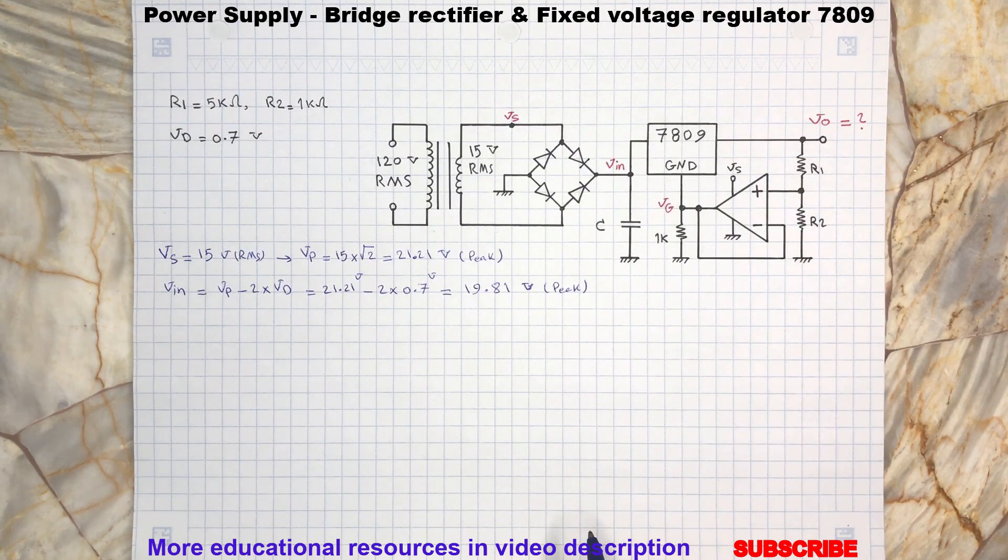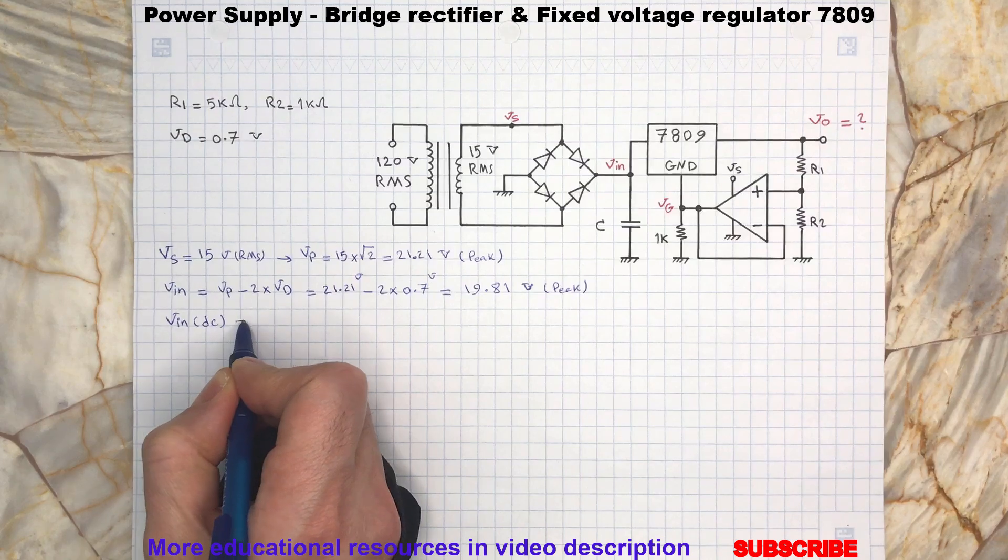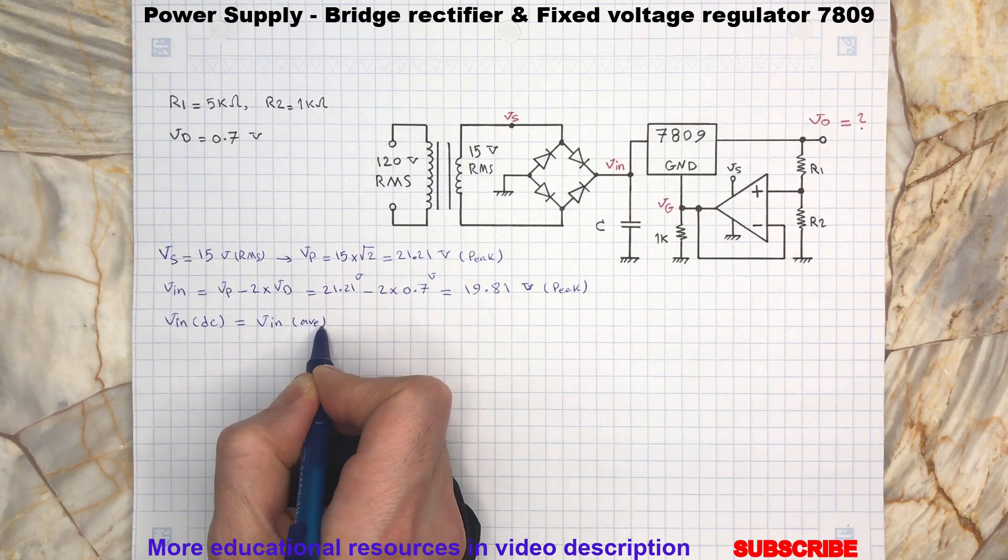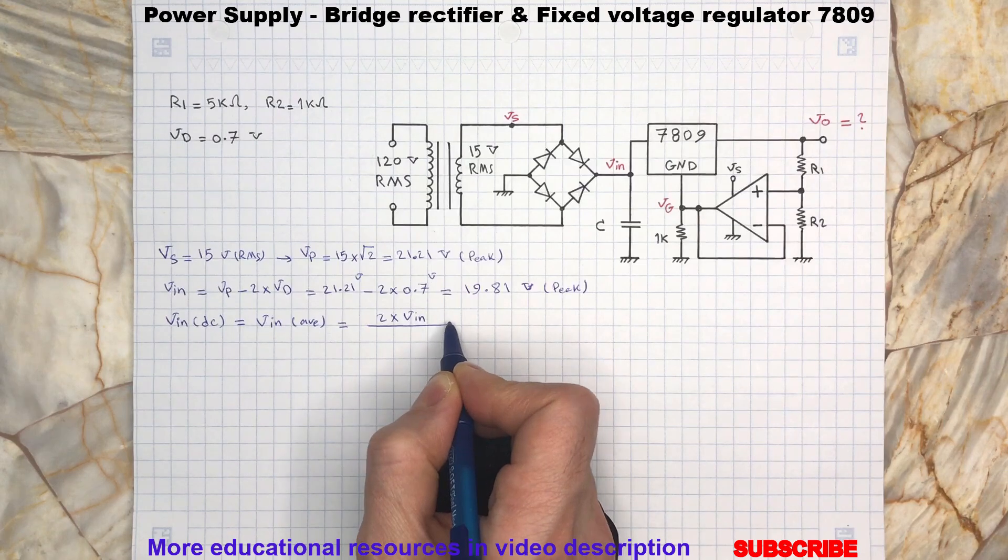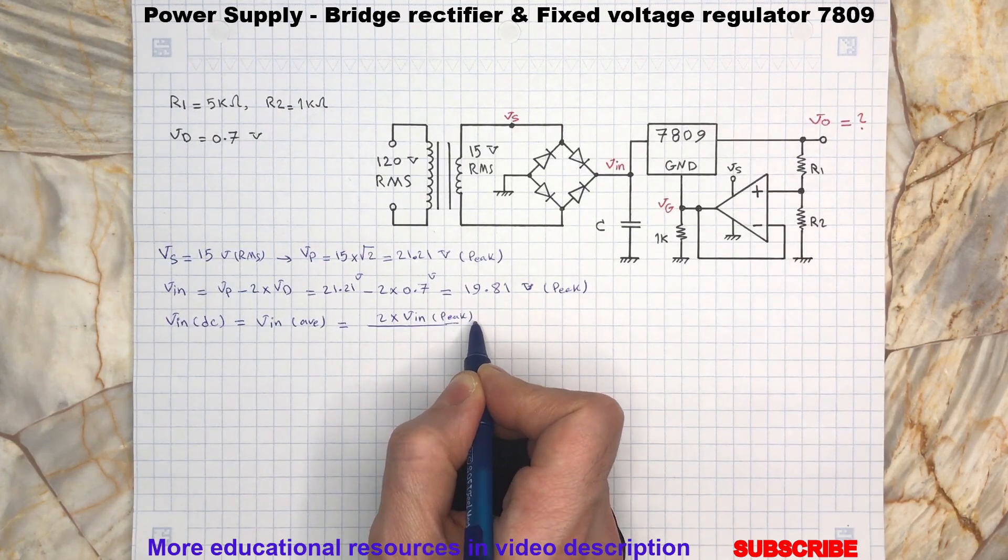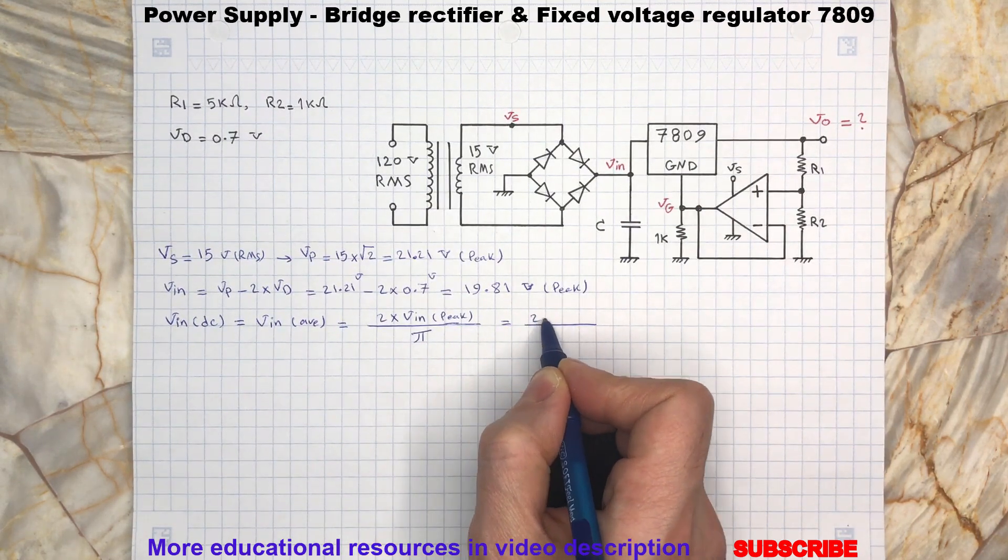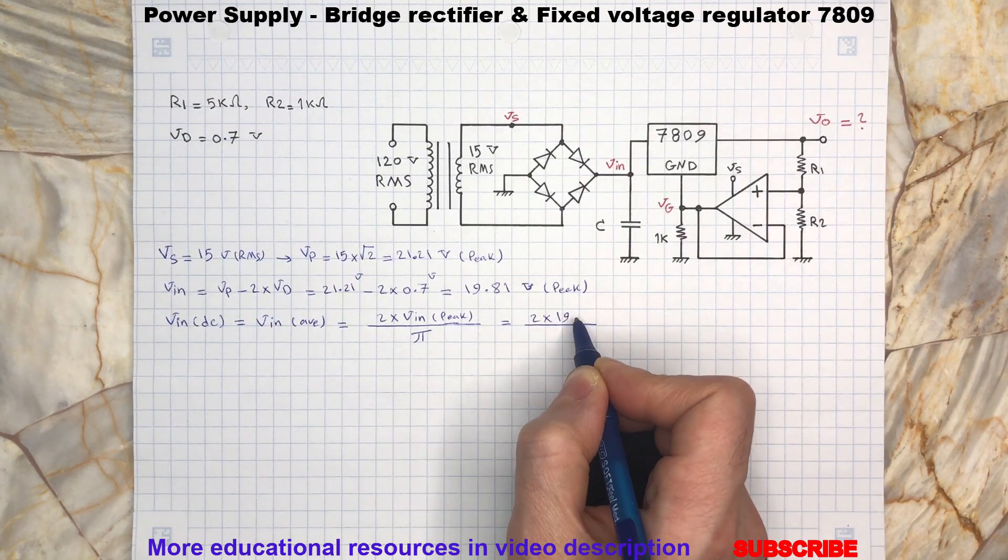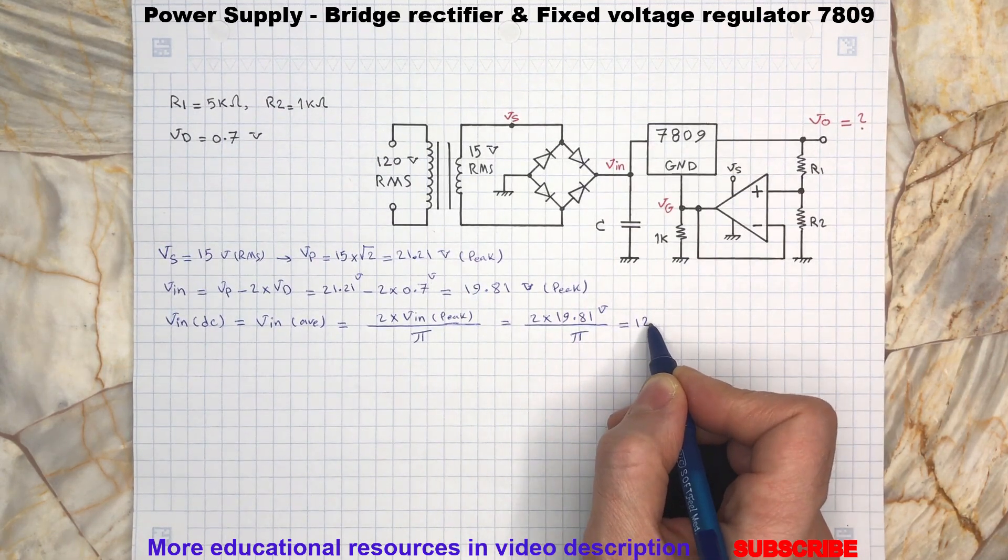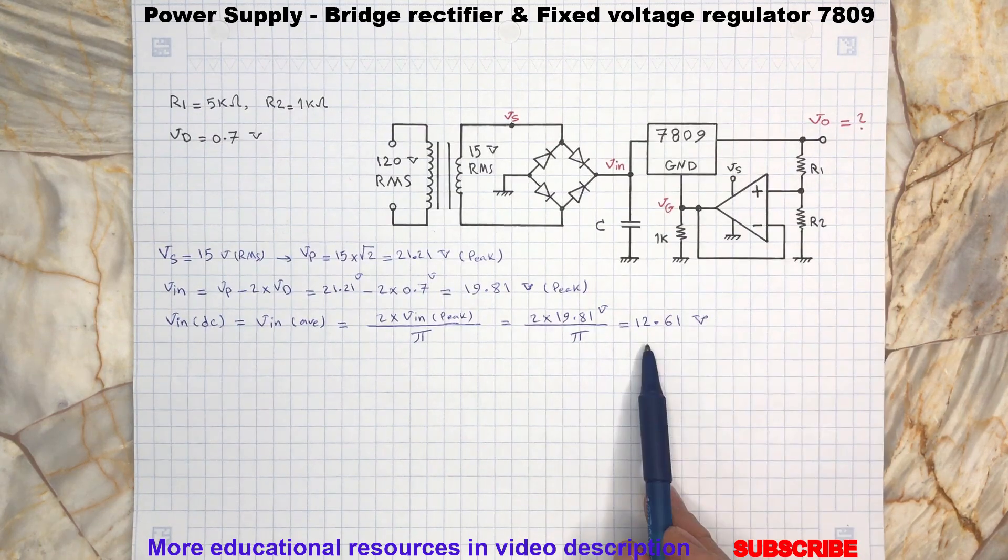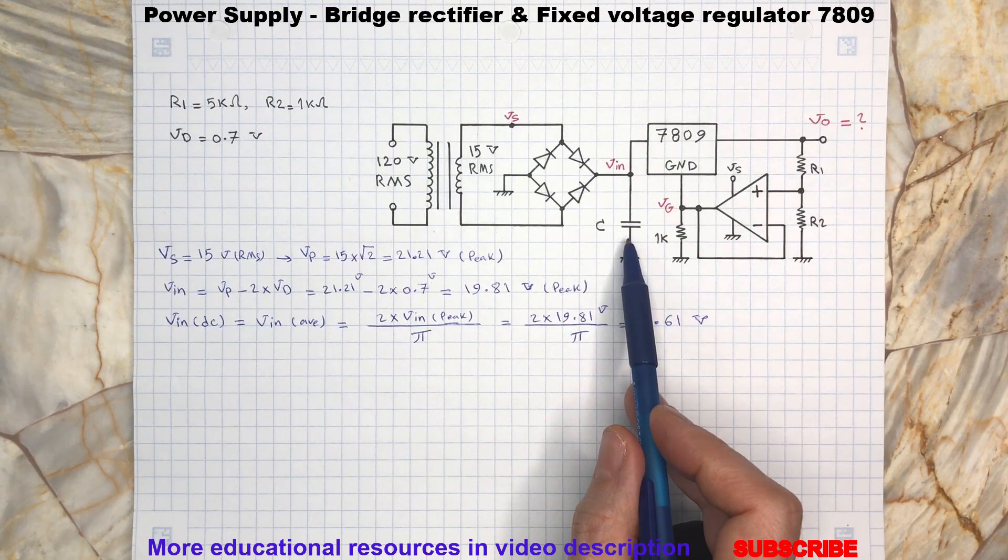So, the DC or average voltage at Vin will be... The unregulated voltage Vin is filtered by capacitor C and connected to the 7809 input terminal.